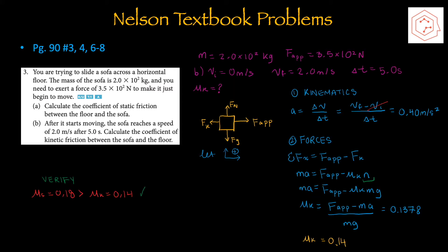For part b, after the sofa starts moving, it reaches a speed of 2 m/s after 5 seconds. Calculate the coefficient of kinetic friction between the sofa and the floor. Since we're given three pieces of kinematic info, we can use one of the big five equations. We have initial velocity of zero, final velocity of 2 m/s, change in time of 5 seconds, plus mass and applied force, and we're solving for the coefficient of kinetic friction.